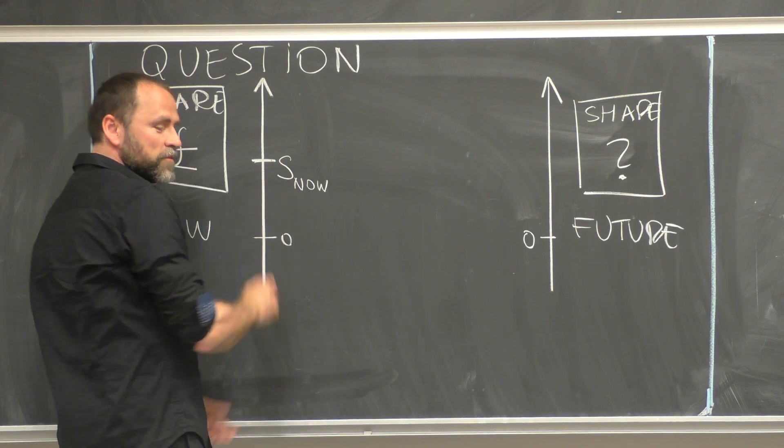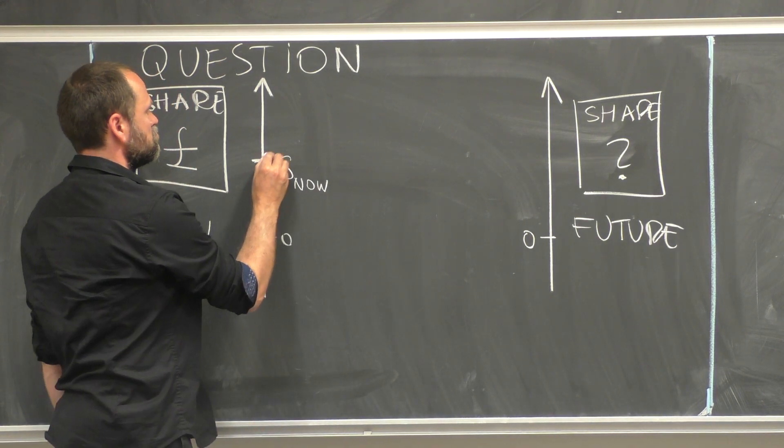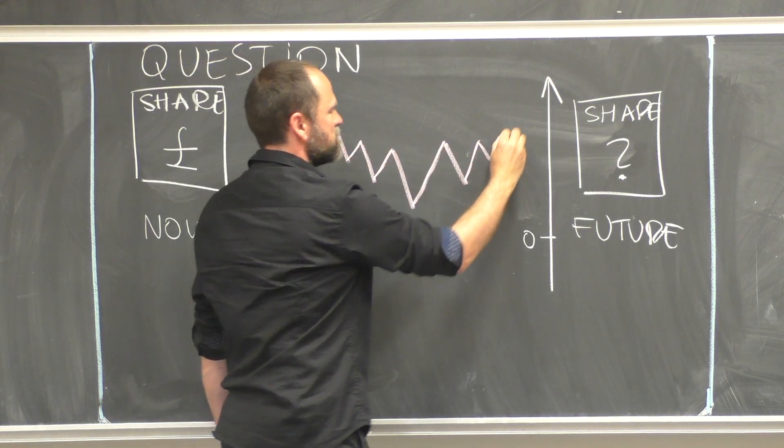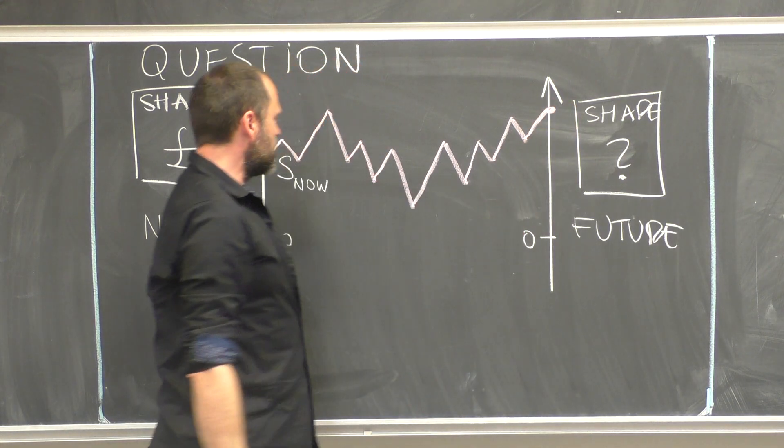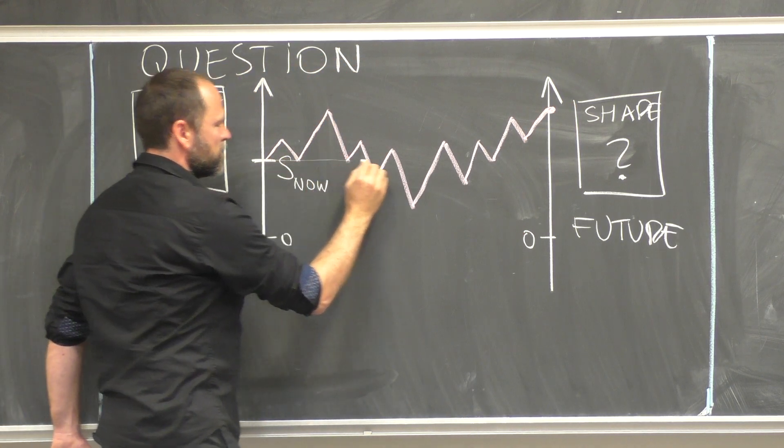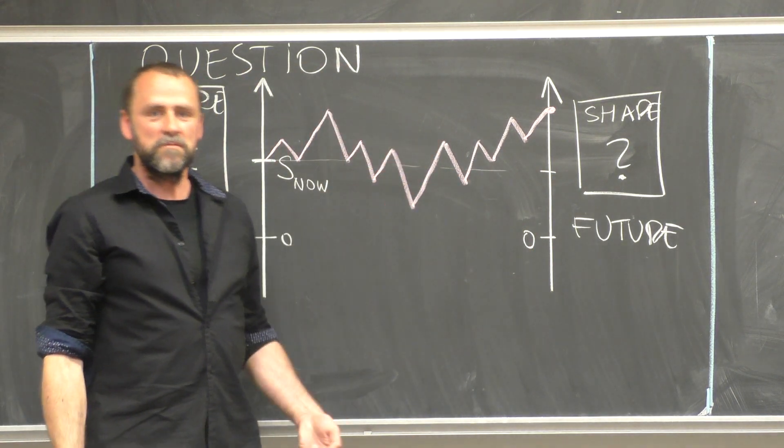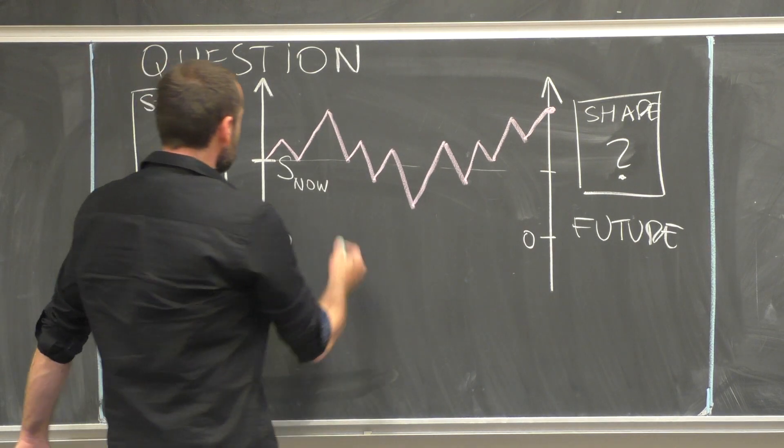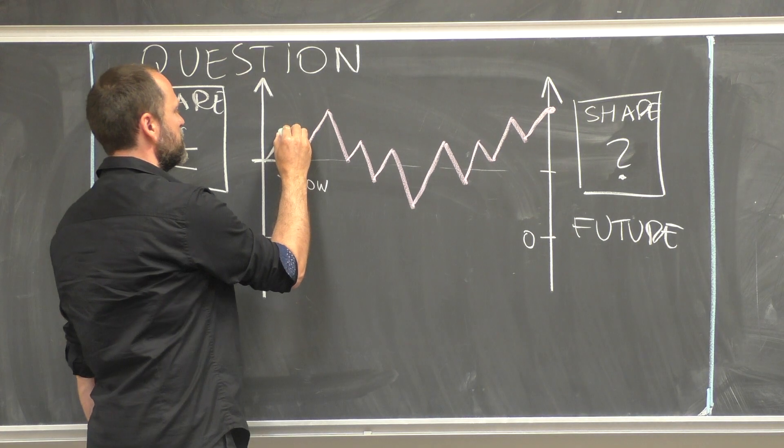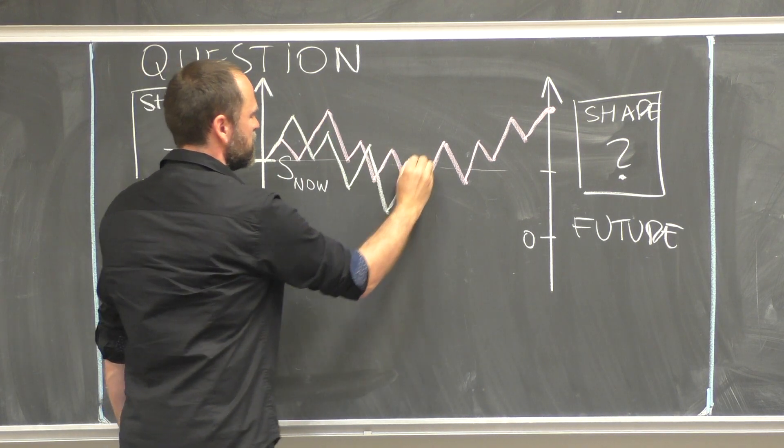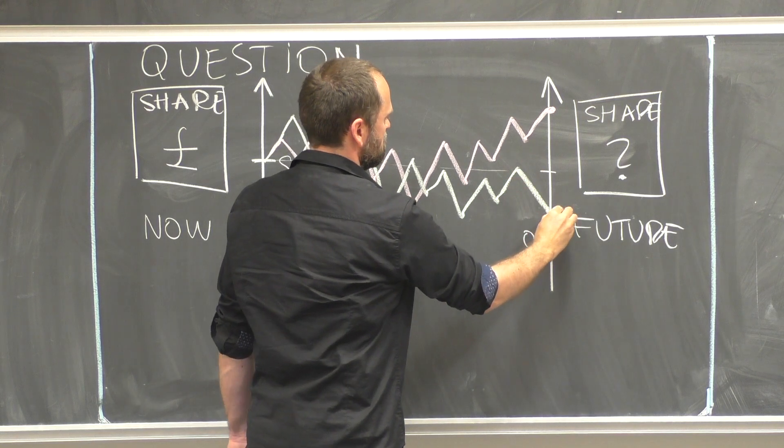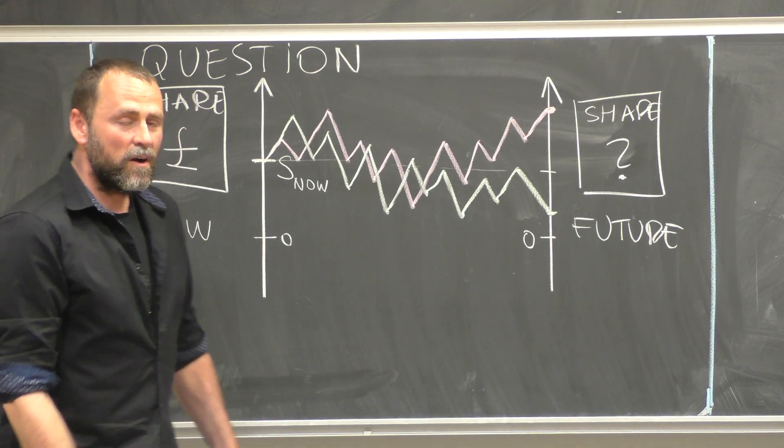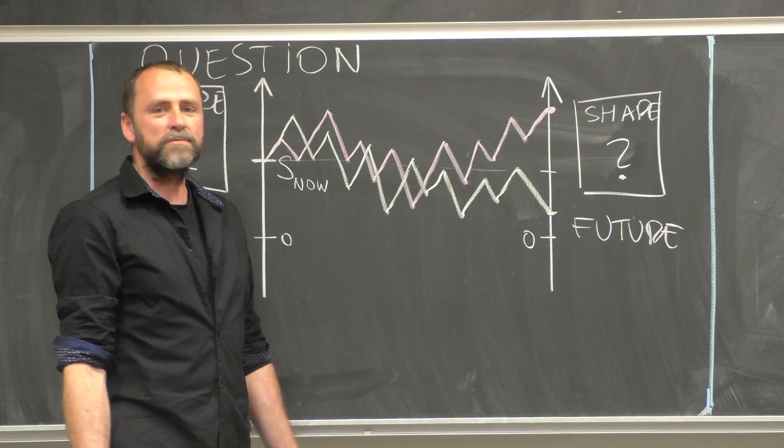What can happen between now and future? Well, the prices can go up, down, up, up, down, down. Something very strange might happen and the price ended up here. If you look at this graph, in the future the price went up, we got richer. Another scenario is that the price go up, up, down, down, down. Something happens and the price ends up here. We are poorer.